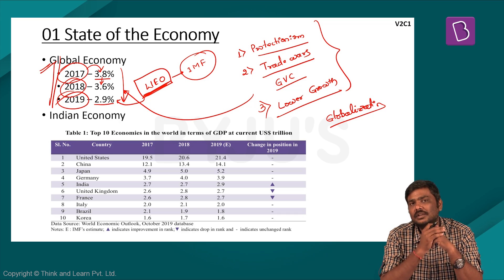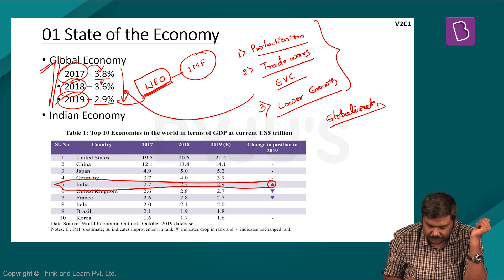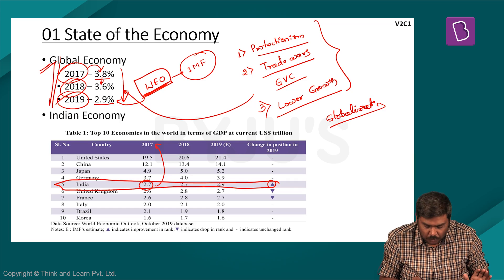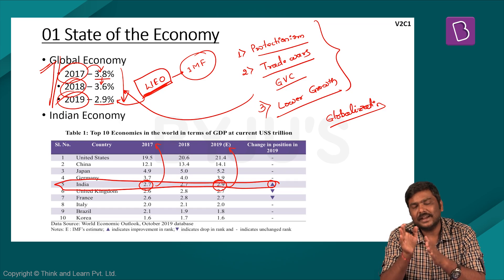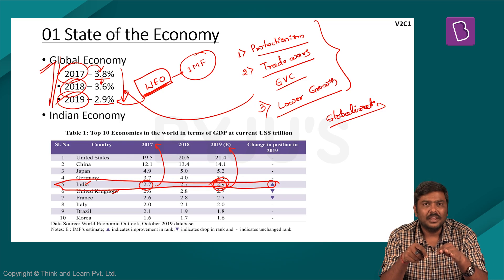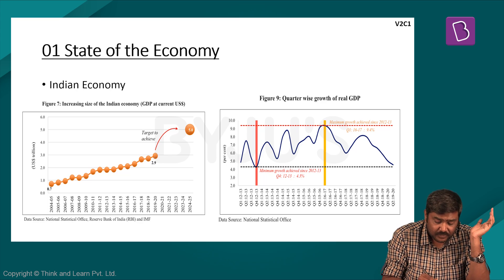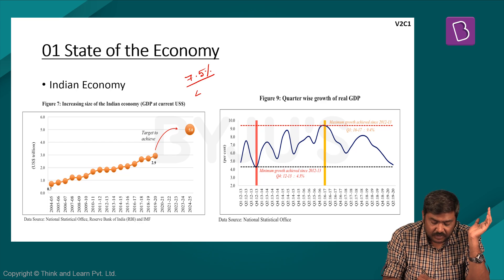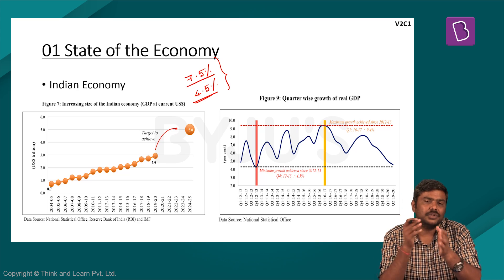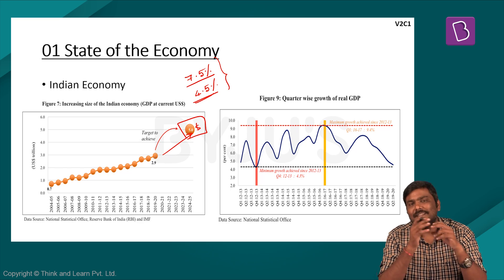Specifically for the Indian economy, some very important points are: first, India is the fifth largest economy globally. The value of GDP increased from $2.7 trillion in 2017 to an expected $2.9 trillion in 2019, and India has overtaken the United Kingdom. Second, in the last five years, India has grown at an average rate of 7.5% with an inflation rate of 4.5%, and with stable inflation and a good GDP growth rate, India is on its way to achieving a $5 trillion economy.